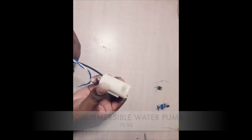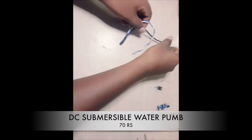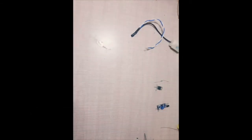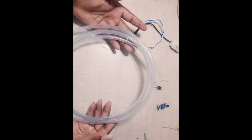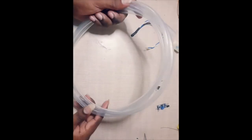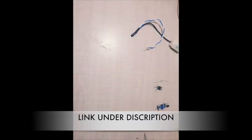And DC water pump, submersible one, that cost is around 70 rupees. And aquarium tube, just one meter only 10 rupees. All those electronic components can be bought in nearby electronic shops and also you can buy on Amazon. They are linked under the description.